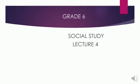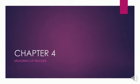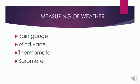I am starting from the Grade 6 science stream, lecture number 4, from chapter number 4: Measuring of Weather. In this chapter I will discuss different instruments that measure weather, like rain gauge, wind vane, thermometer, and barometer. Let's discuss each instrument of weather.